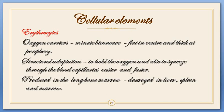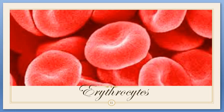Biconcave is a kind of structural adaptation seen in RBC. When RBC is newly formed, it would be in the shape of a sphere — like a small ball. When this RBC loses its nucleus as it grows mature, it gains the biconcave shape. You can see this concavity on both the upside and downside of the sphere-shaped structure. This is a mature RBC shape.